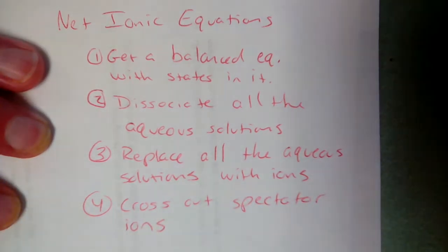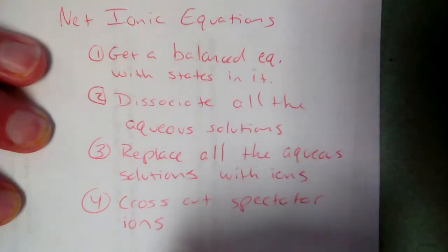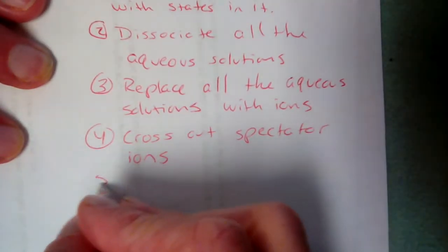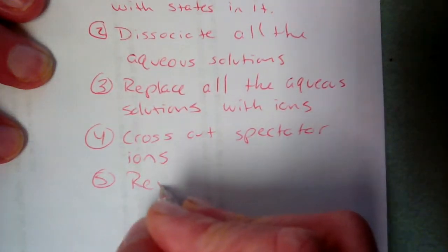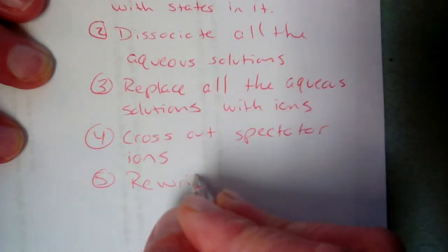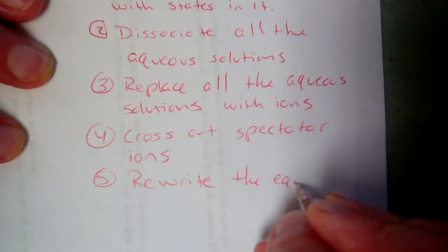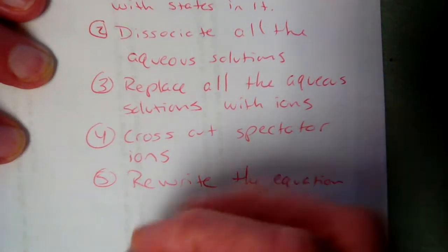We'll go back through and cross out all the aqueous solutions and rewrite it with the component positive and negative ions instead. Then we cross out what we call spectator ions — these are ions present on both the reactant and product side. Nothing is happening to them, which is why we cross them out and rewrite the equation with whatever's left.